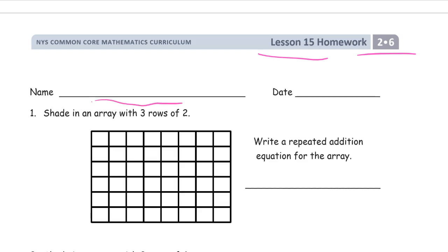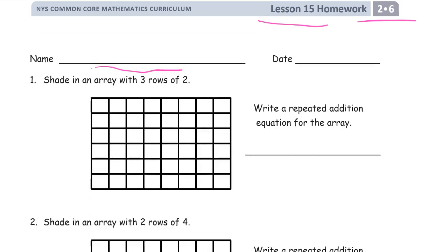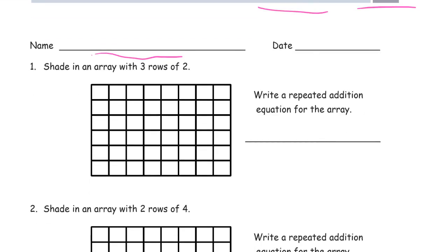Shade in an array with three rows of two. So three rows of two. I need three rows. One way you can do this is to say, okay, I need three rows. So there's going to be a row, that's going to be a row, and that's going to be a row. And I need two in each row. So that's like that.